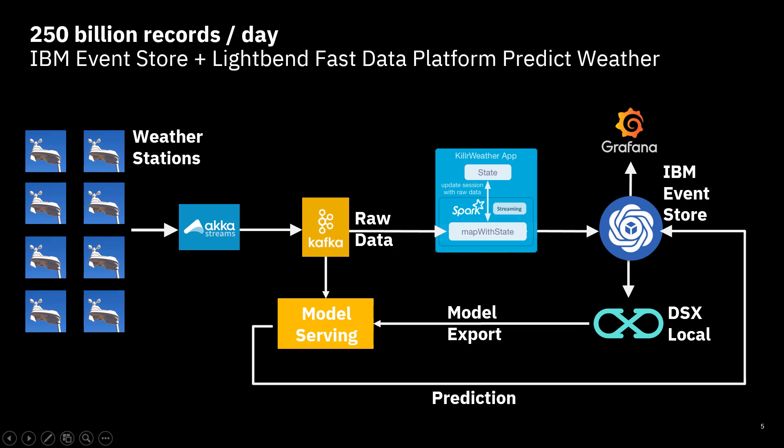The Lightbend Fast Data Platform — Akka Streams and Kafka — is going to ingest all of this raw data from the weather stations. We're going to feed that into DB2 Event Store and create a machine learning model via the DSX Local interface, then feed that back into our model-serving prediction engine and replay that to come up with predictions on what's going to happen in the future. We'll display all this using a Grafana user interface, an open source tool that displays all the different data points being ingested and shows clearly what we're going to predict.